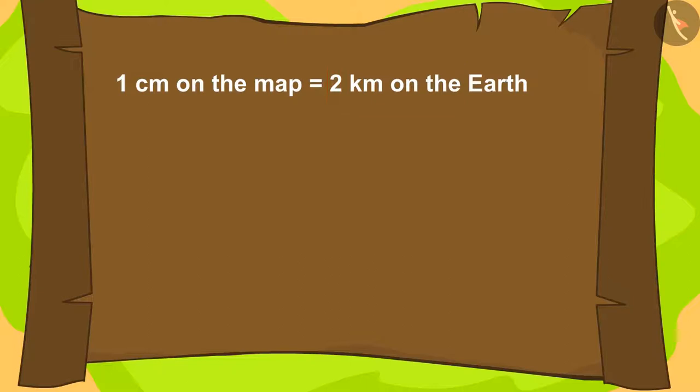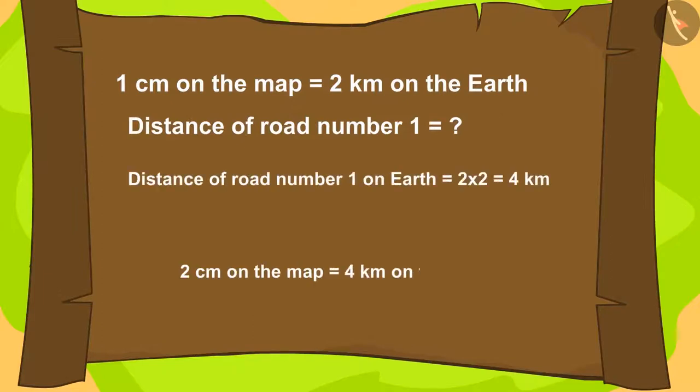2 km. What is the distance of road number 1 in this way? 2 times 2 equals 4 km.